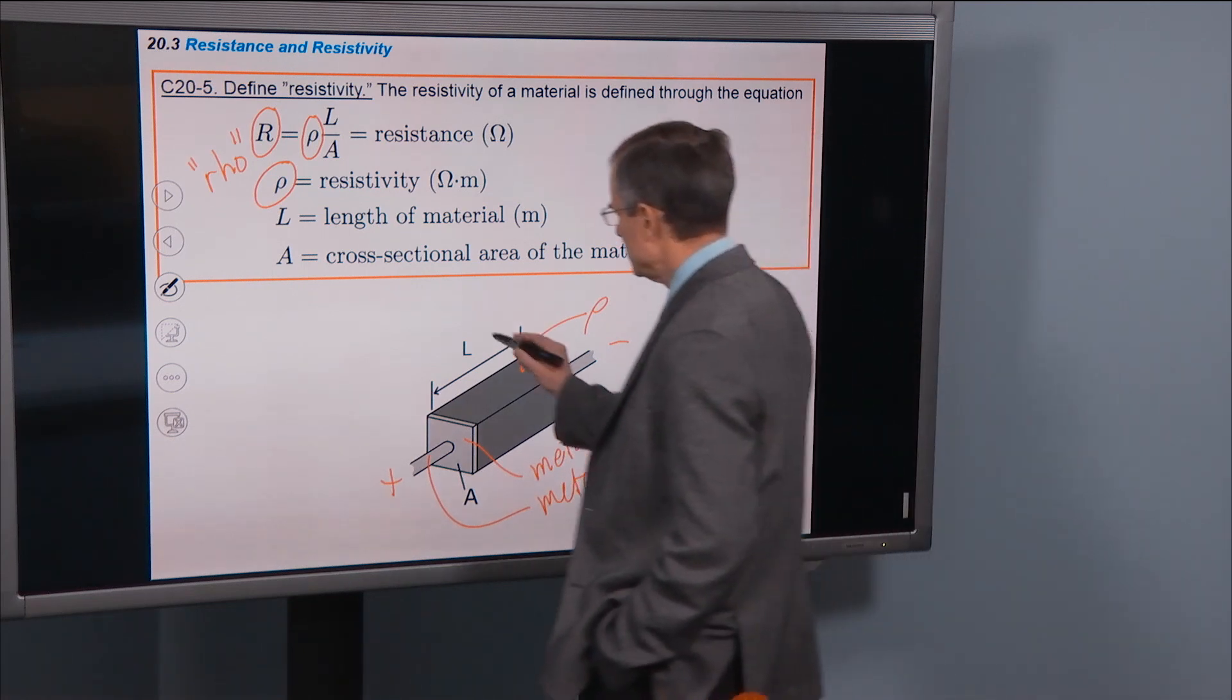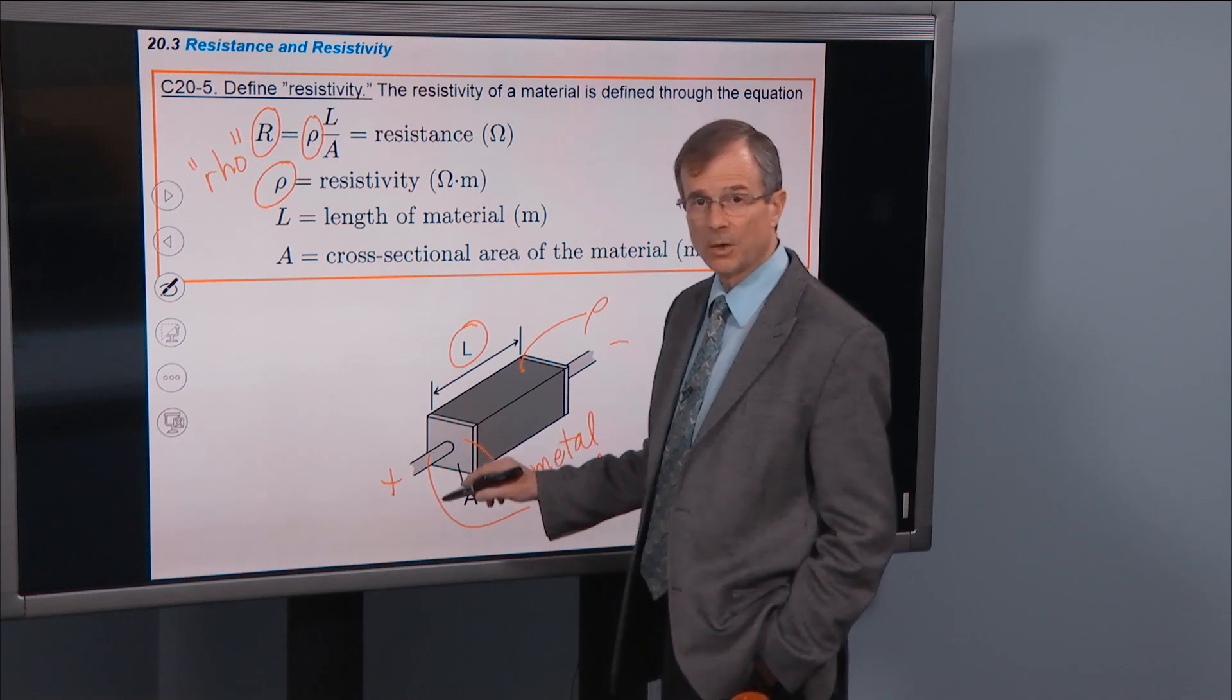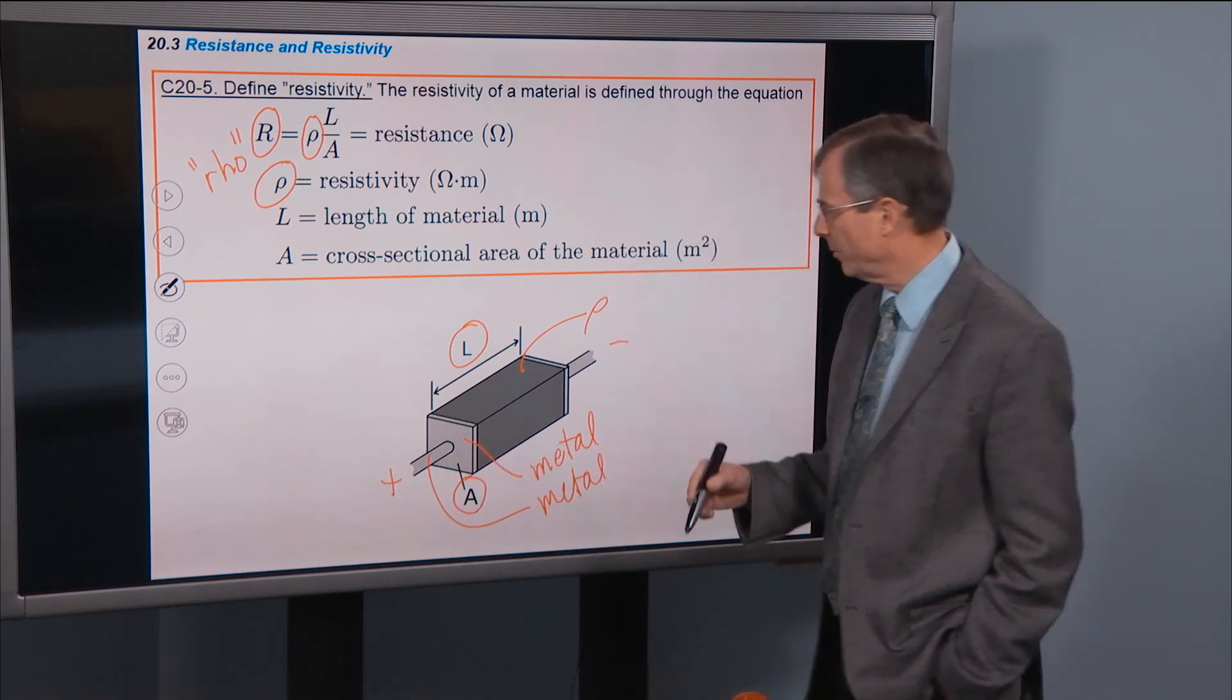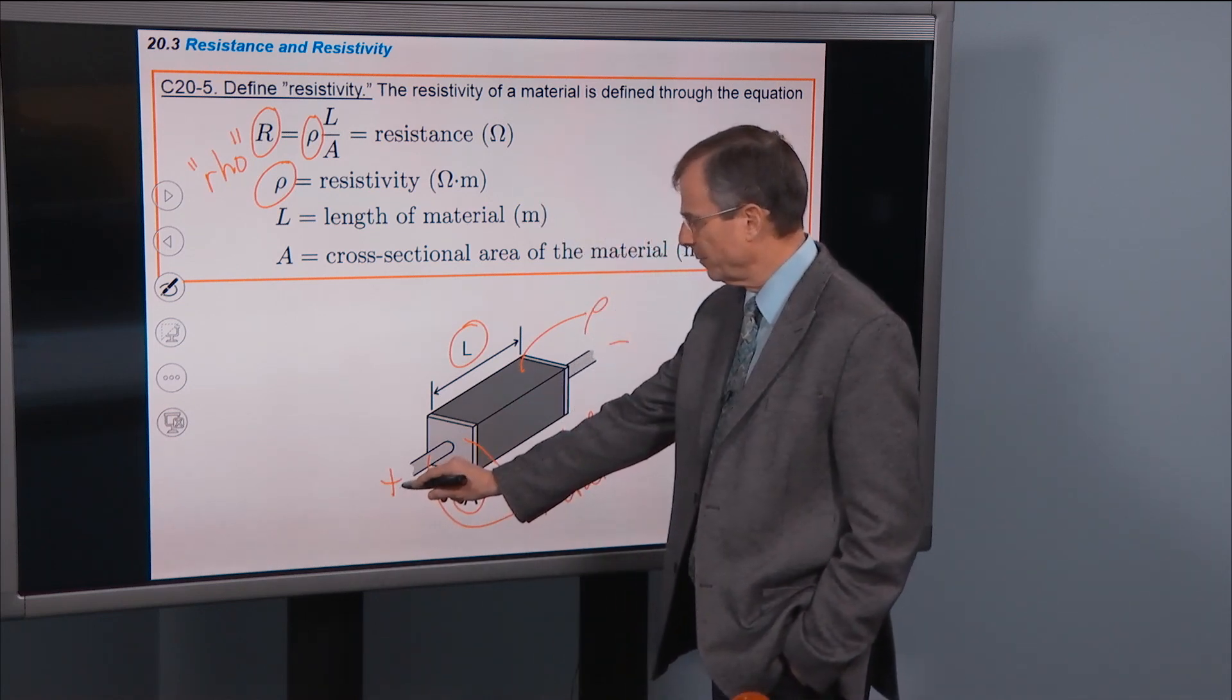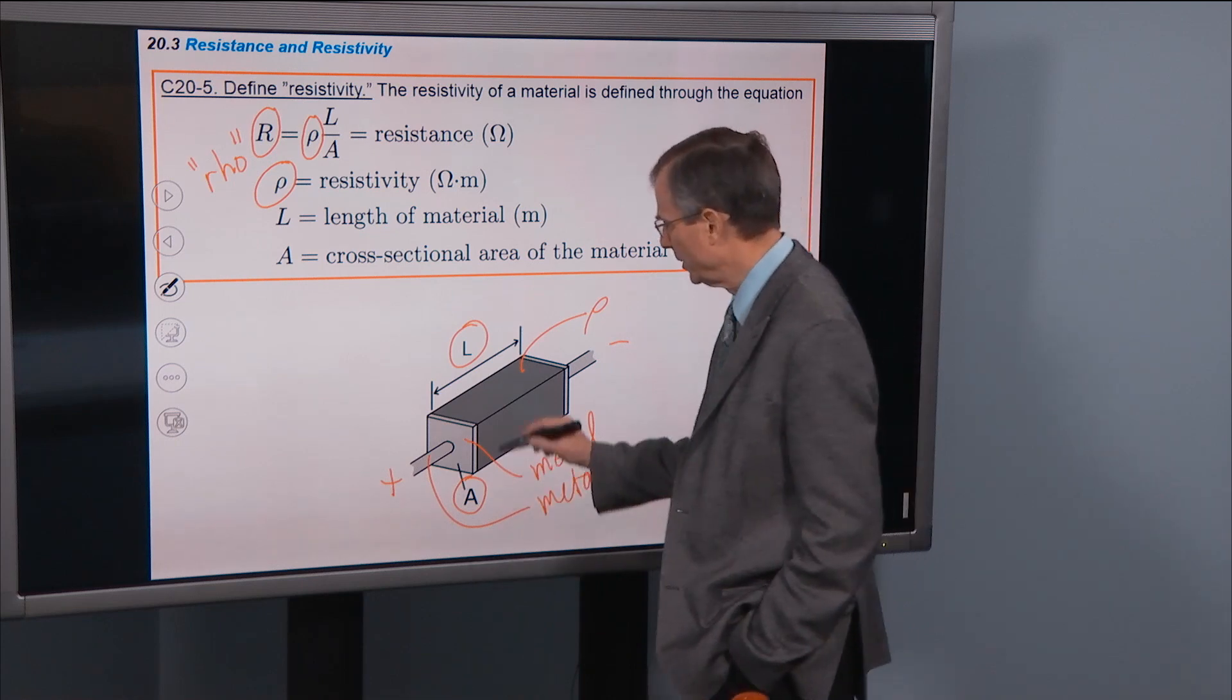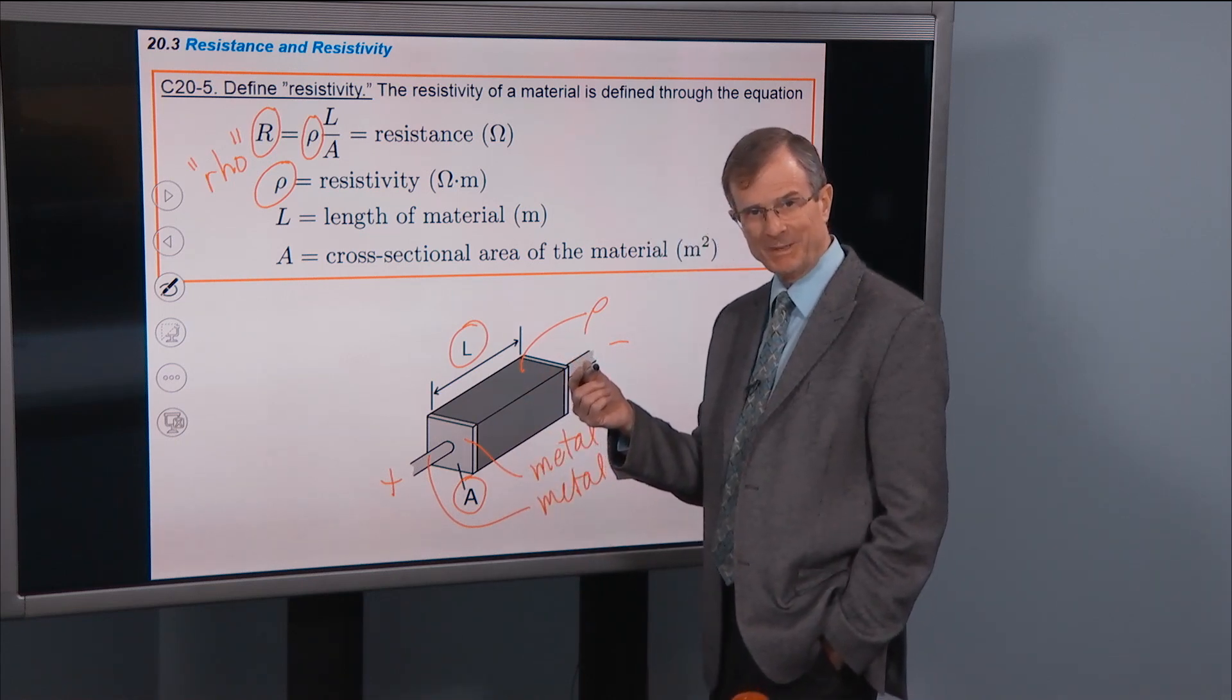So what matters here is the length of that material and the cross-sectional area of that material perpendicular to the direction of flow of current. Now if this is the positive terminal of the battery over here connected to the positive terminal, then what direction will the current be in? You say...